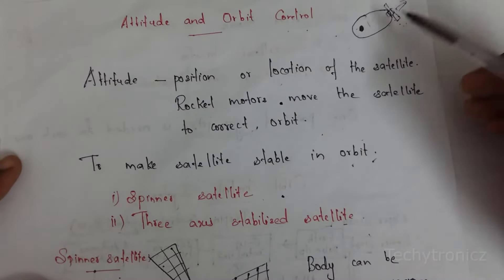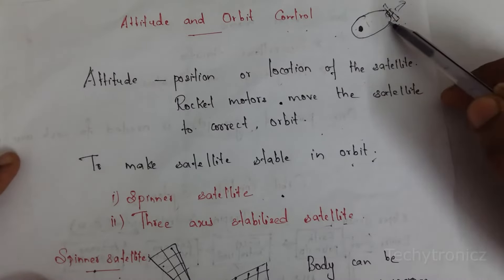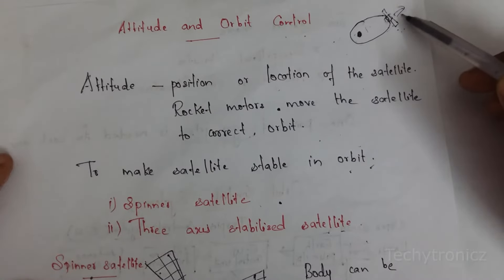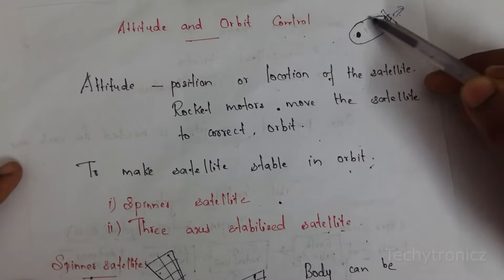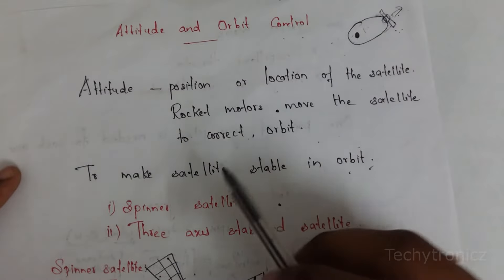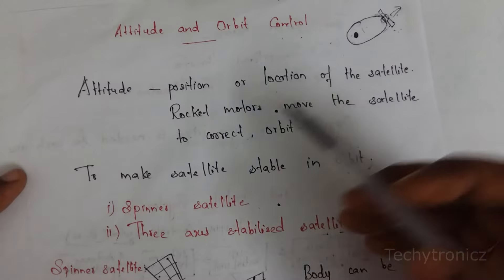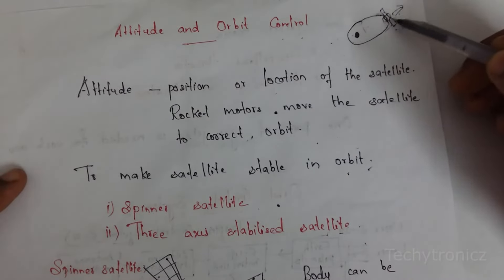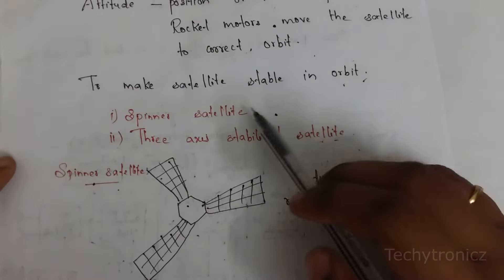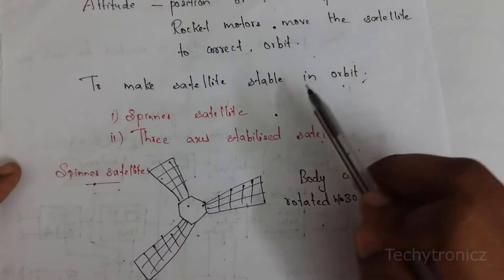The satellite must stay in position along its orbital path. If the satellite drifts from the orbital path, the subsystem corrects it and places the satellite back in the correct position. Rocket motors are used in the satellite to keep it in the correct direction along the orbital path.